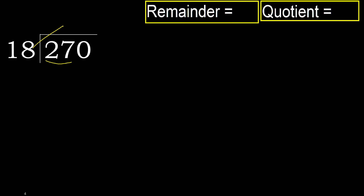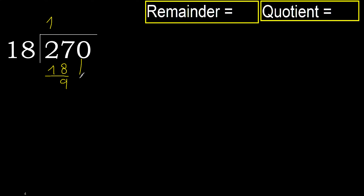18 multiplied by 2 is 36 — 36 is greater. 18 multiplied by 1 is 18 — 18 is not greater. Subtract, 9. Next.